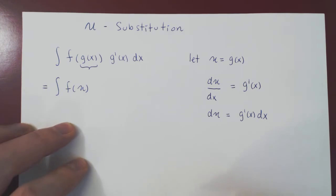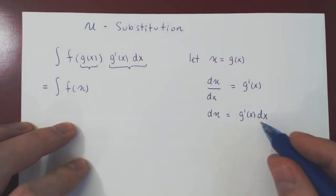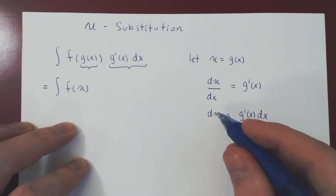And that is the missing part of our integrand, right? g prime of x dx as a function of u is simply du.